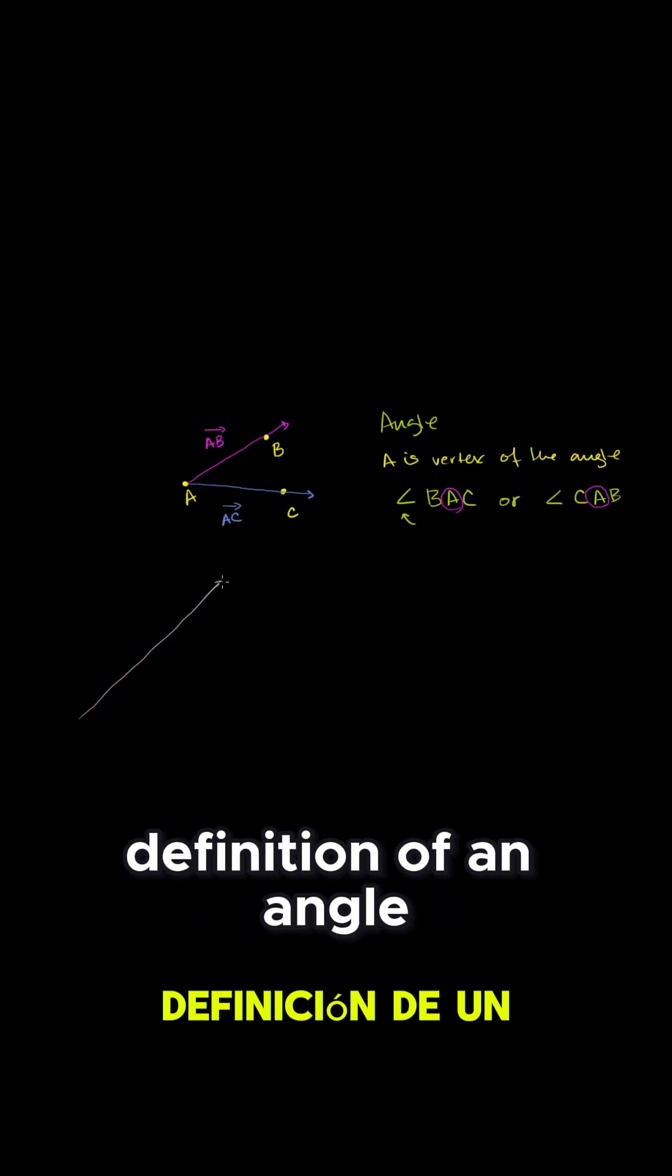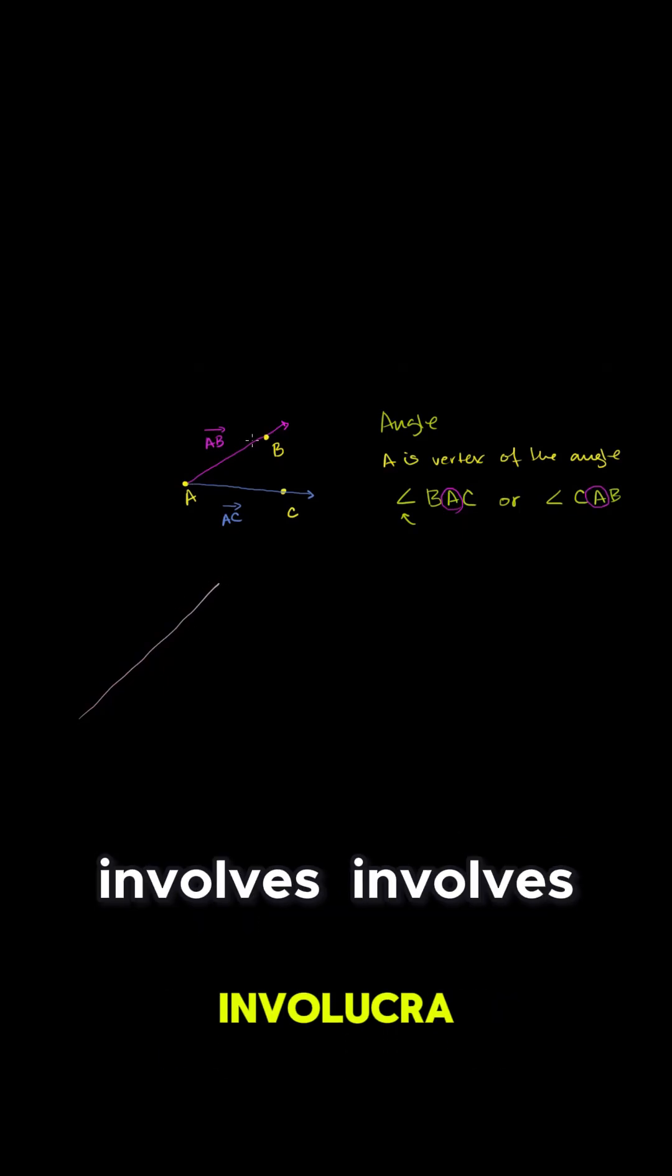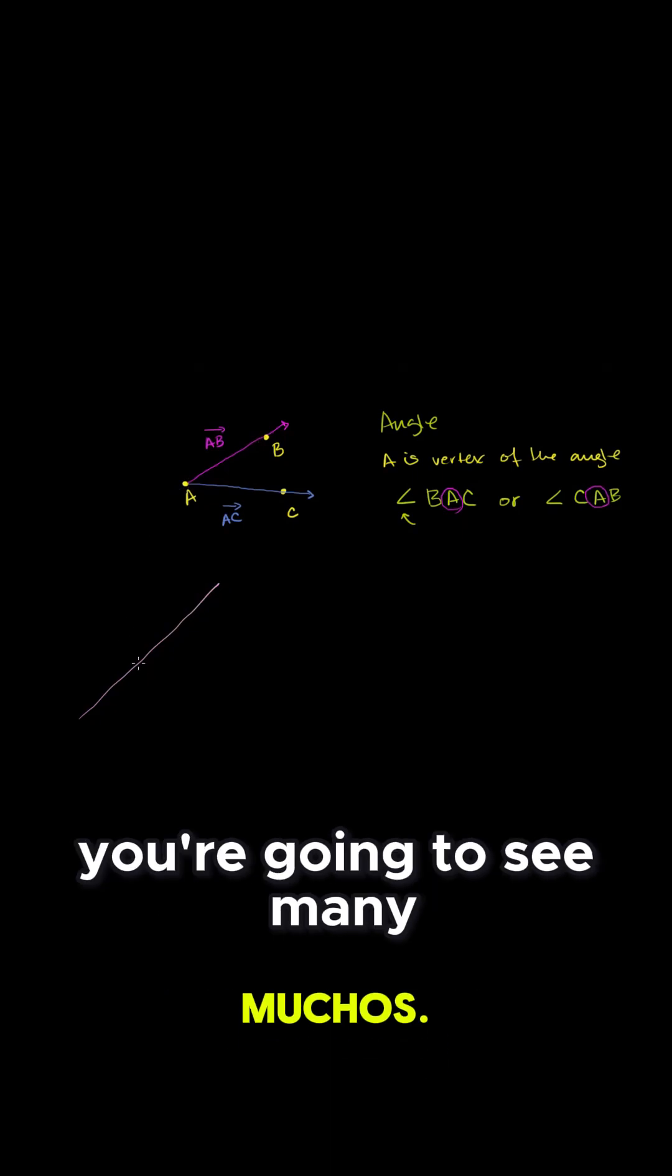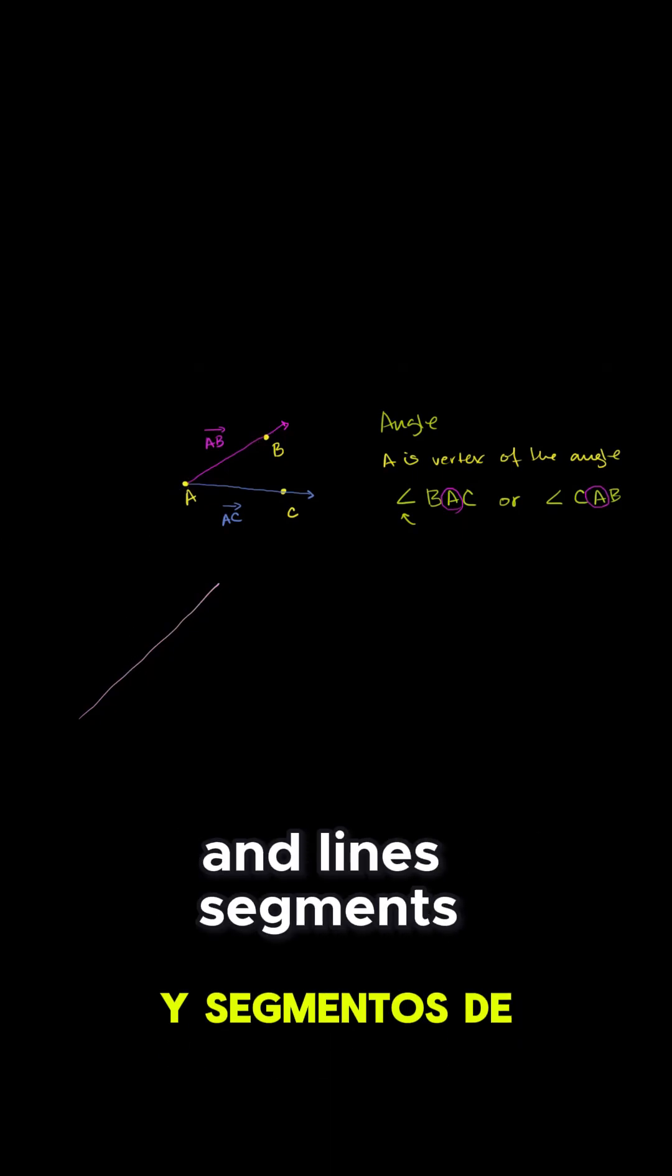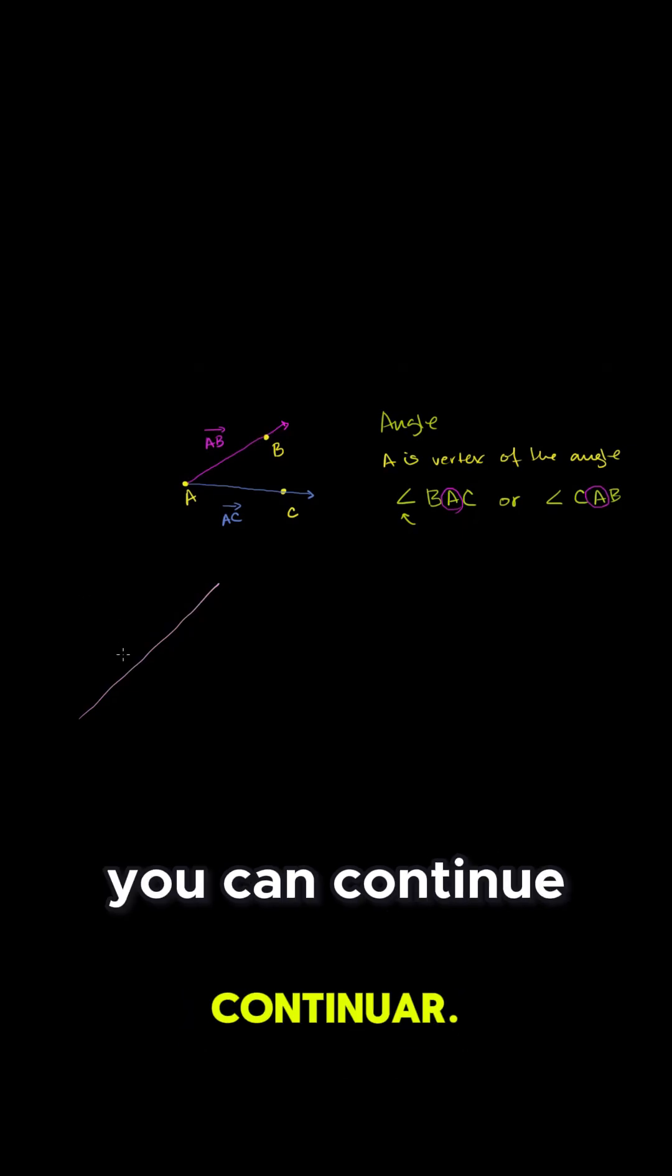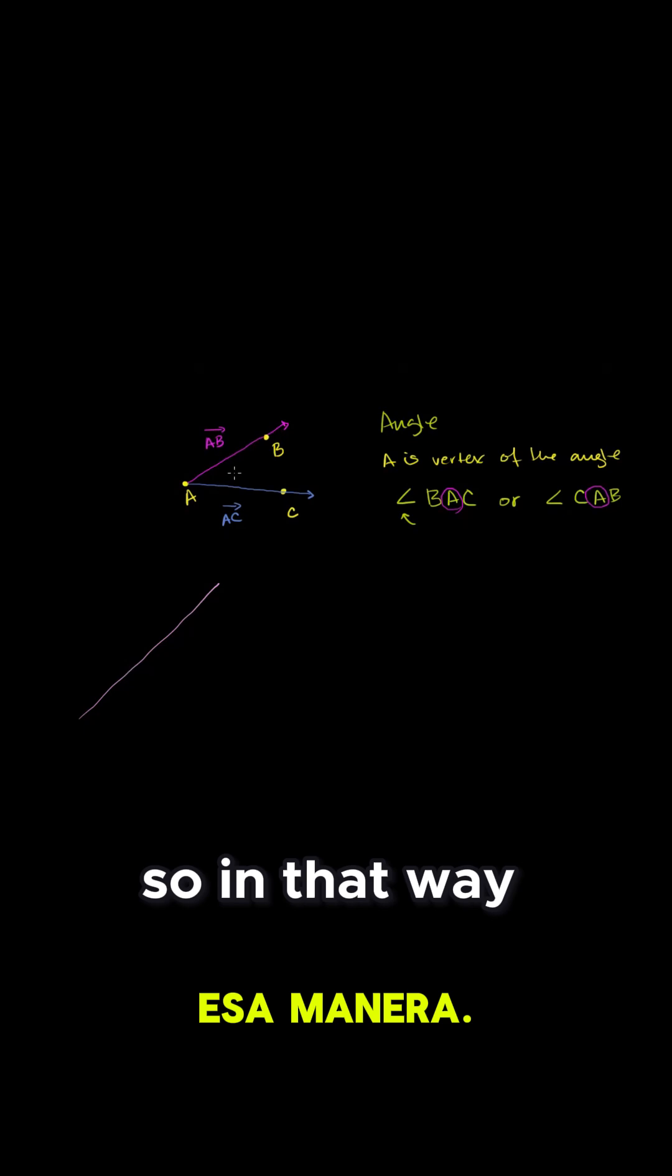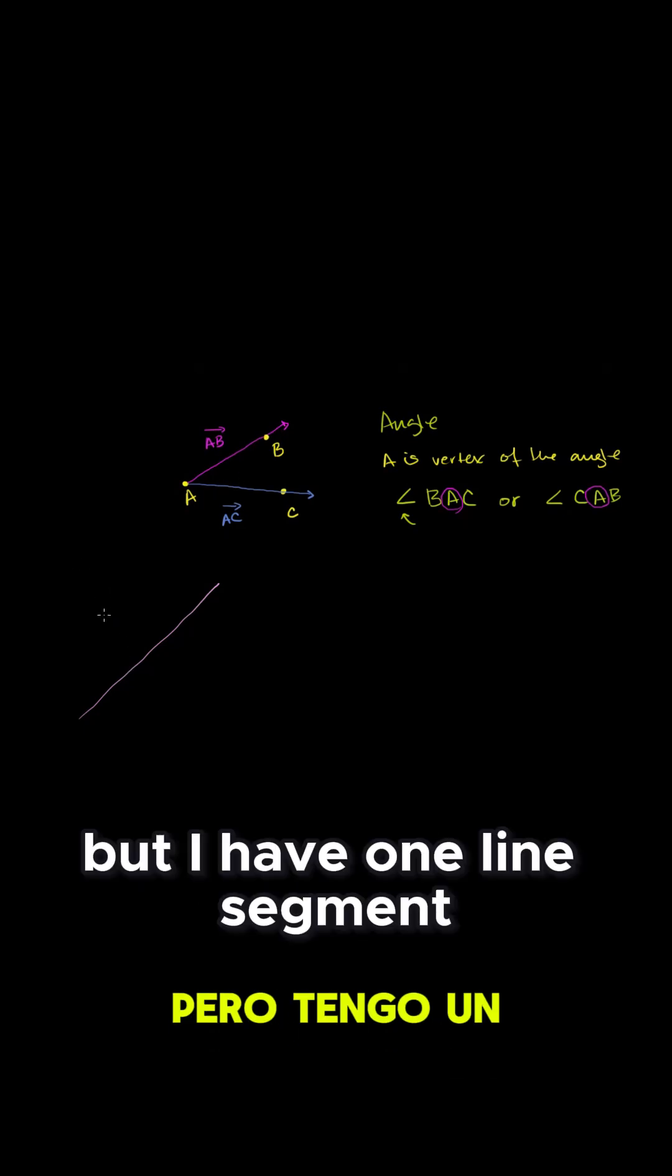And although the geometric definition of an angle involves two rays that have the same vertex, in practice you're going to see many angles that are made up of lines and line segments. And you can imagine that you could continue those line segments on and on in one direction, and then they would become rays. In that way, they're consistent with this definition.